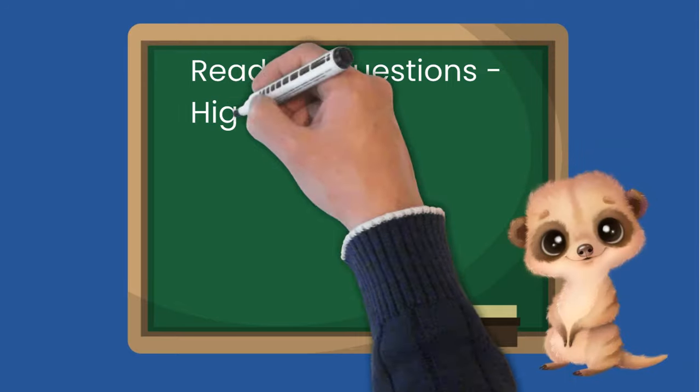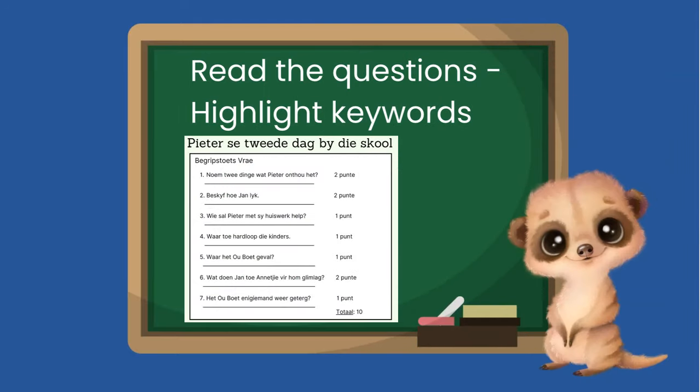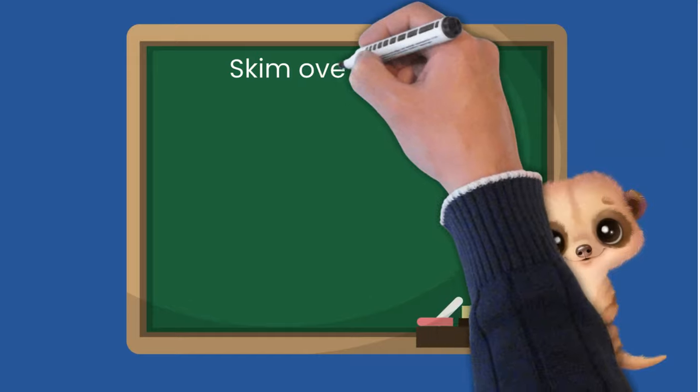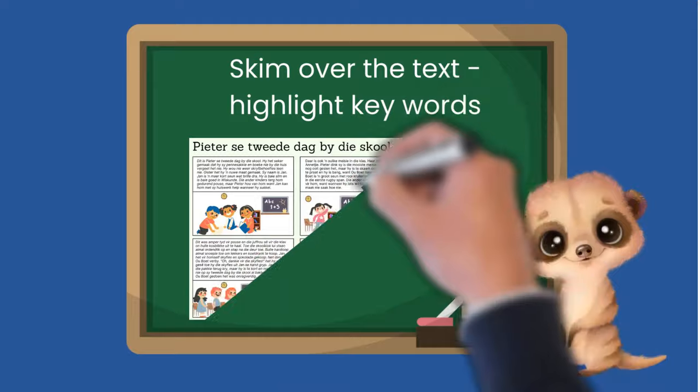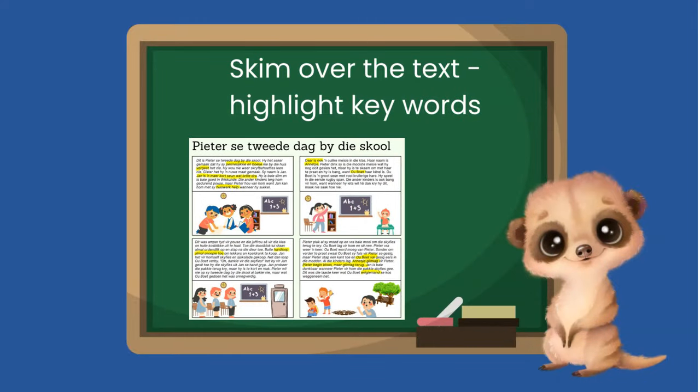Now before you get going with the text, read the questions first and highlight the keywords. This will save you time when reading the text by looking for and focusing on the keywords. Once you have highlighted the keywords in the questions, skim through the text and look for the same keywords. This will help you save time when finding the answers.